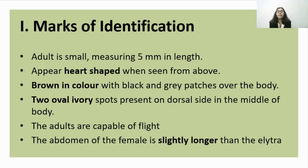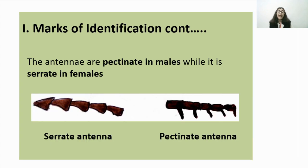Adults are capable of flight. The abdomen of the female is slightly longer than the male. Sexual dimorphism is clearly observed. Even the antennae differ in males and females — there is a pectinate antenna in males and a serrate antenna in females. The same has been shown in the diagram.